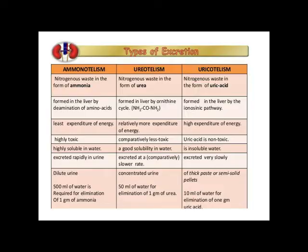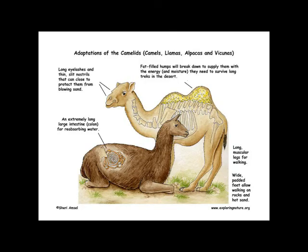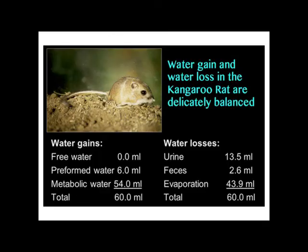Certain organisms have the ability to conserve water within the body, and certain desert organisms can sustain on metabolic water — kangaroo rat is an example. In humans, we lose water through urination, sweating, and evaporative loss through expired air. So we lose water through sweating, through respiration, and by urination.